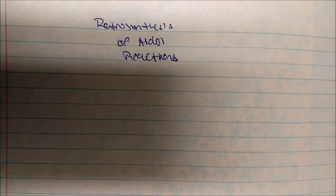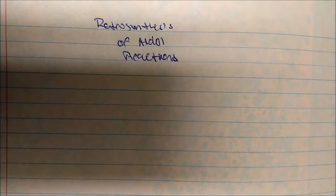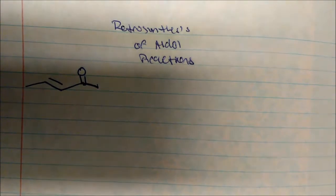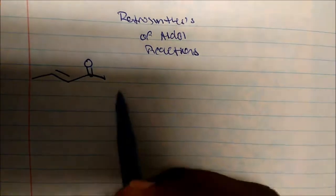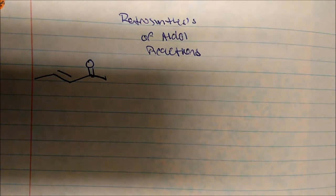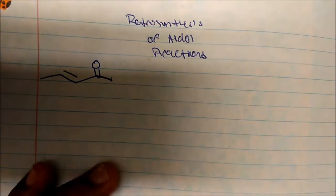In this video I want to talk about the retrosynthesis of aldol chemistry. This is the hard part — when you're given a product on a test and you're asked to make it. So what if you're given this molecule and the professor told you to make it? The first thing I look to do is see that this looks like an alpha-beta unsaturated carbonyl. I'm going to walk through the retrosynthesis process first.